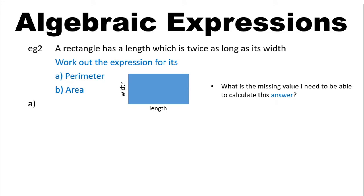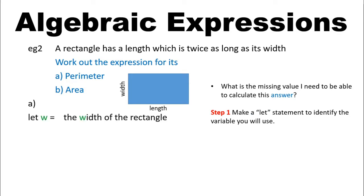First of all, what is the missing value or values that I need to be able to calculate this answer? I would need to know what the length and width are. So I'll start by making my let statements. Let W represent the width of the rectangle, and let L represent the length of the rectangle.